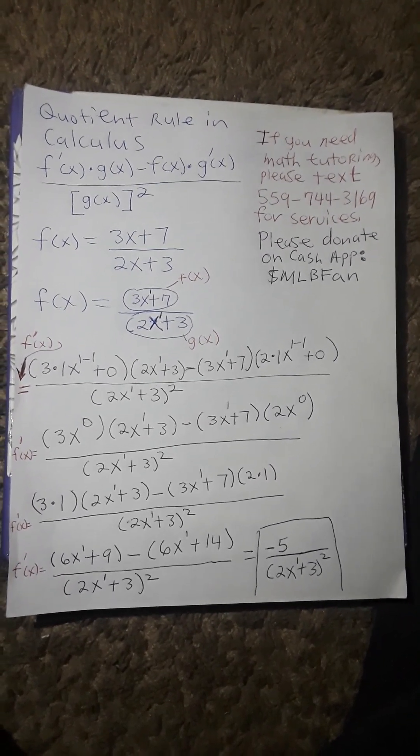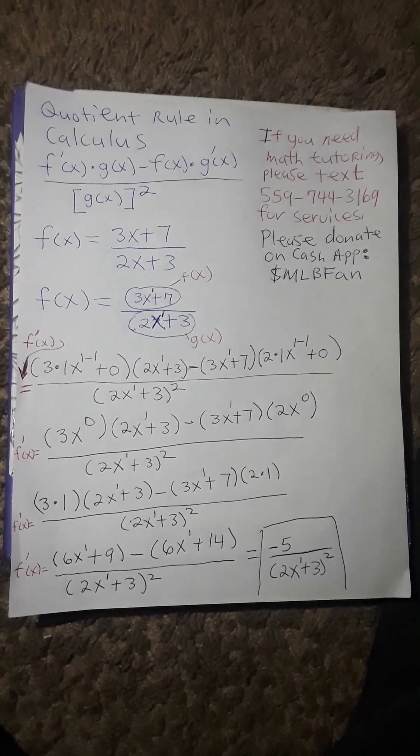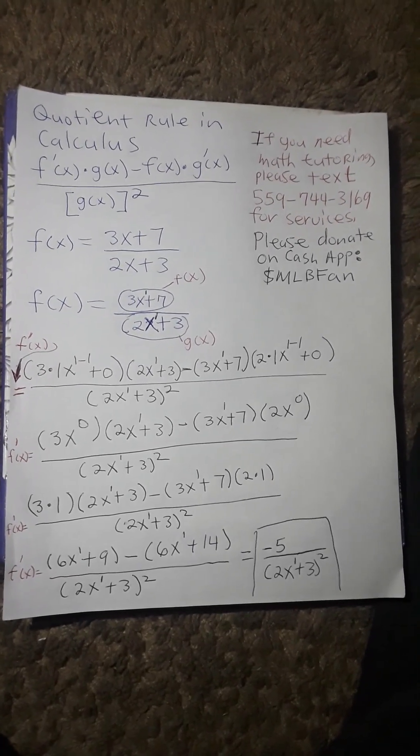Quotient rule explicitly states f prime of x times g of x minus f of x times g prime of x divided by g of x squared.